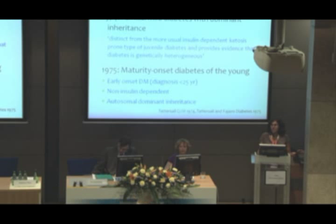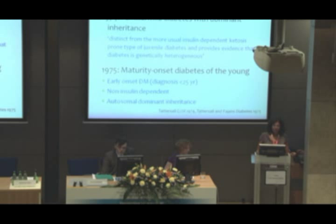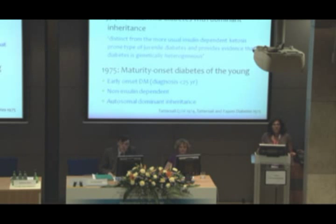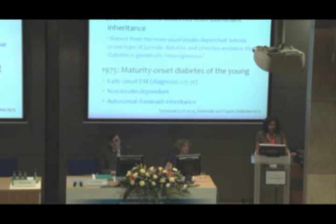A year later, in collaboration with Stefan Fajans, he first introduced the term maturity-onset diabetes of the young into the literature, based on a description of a large pedigree in Chicago. This family shared similar features to the cases described one year earlier. They defined maturity-onset diabetes of the young based on three clinical features: early-onset diabetes in at least one family member usually diagnosed before age 25, the presence of non-insulin-dependent diabetes with patients maintaining good glycemic control off insulin for at least two years, and a strong family history of diabetes with a dominant pattern of inheritance.